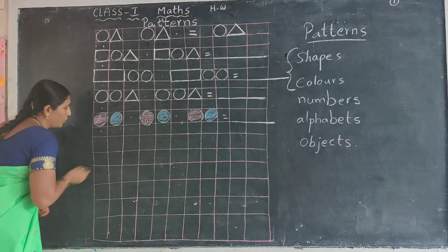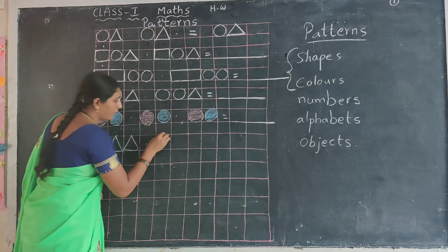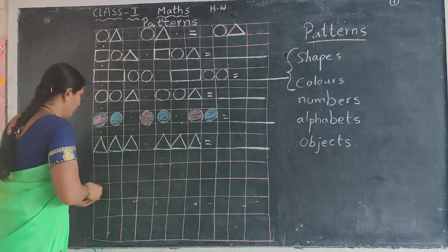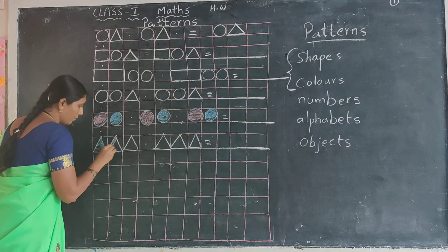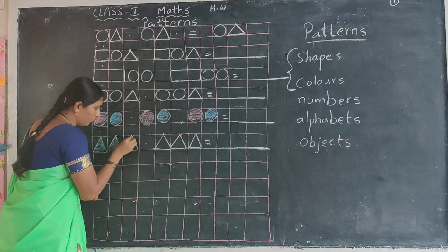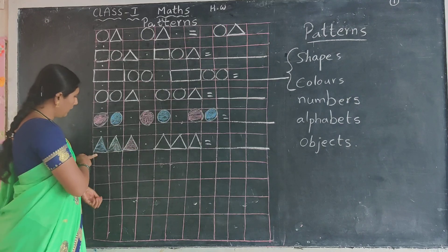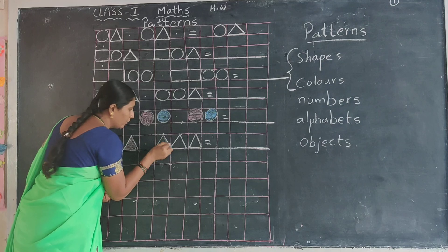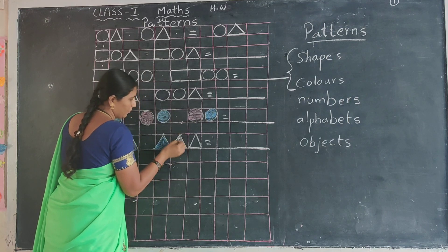Now I take triangles. I take clear triangles again. See — first one is blue color, next white. White means whichever color you have, use that color — green, yellow, orange, you have so many colors. Next the pattern is: blue, white, pink. If you start the next pattern, which color do you use? Blue — right. Blue, then white, then pink. You have to fill in the next one.